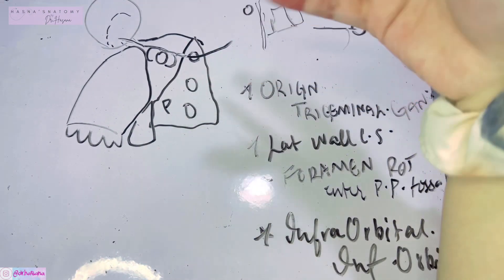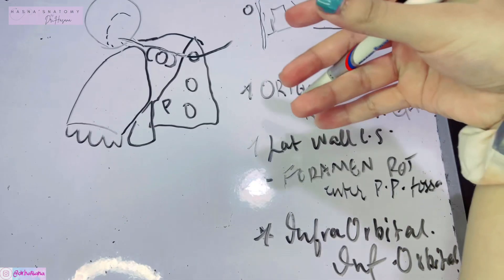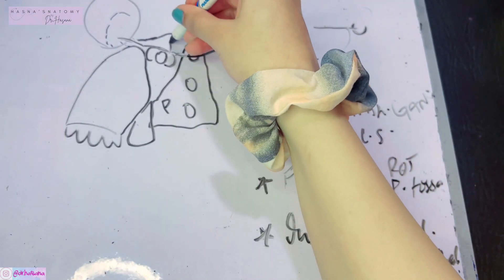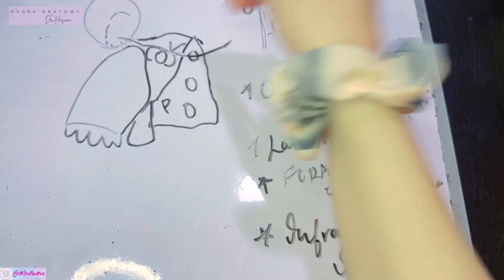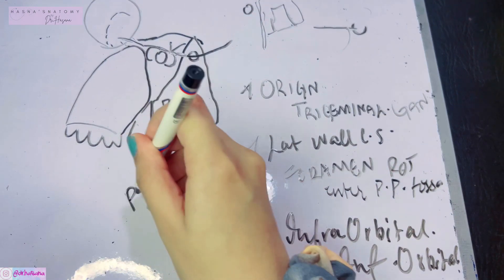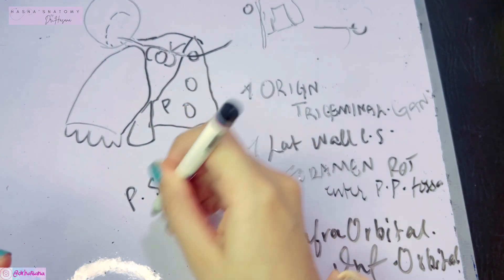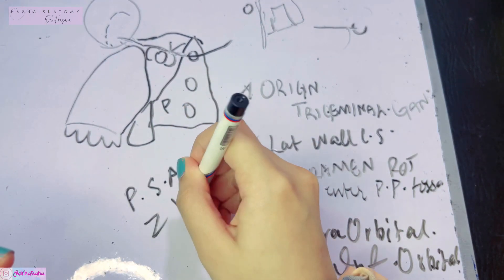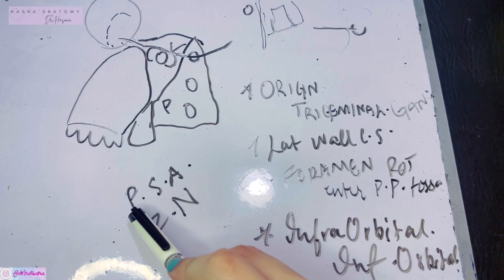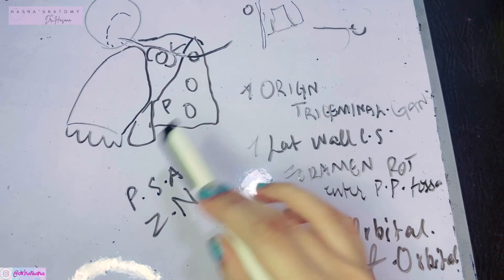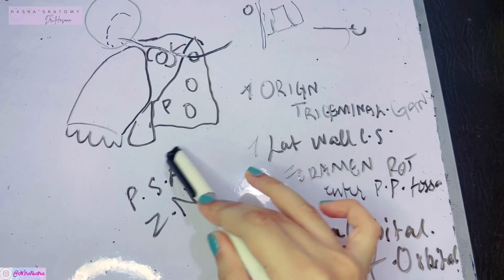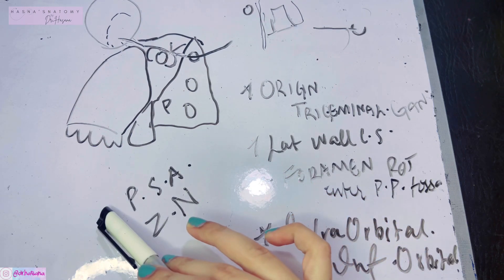The next two important branches given in the pterygopalatine fossa are the posterior superior alveolar nerve and the zygomatic nerve. The posterior superior alveolar nerve — I'm sure this rings a bell — was a branch associated with the third part of your maxillary artery.